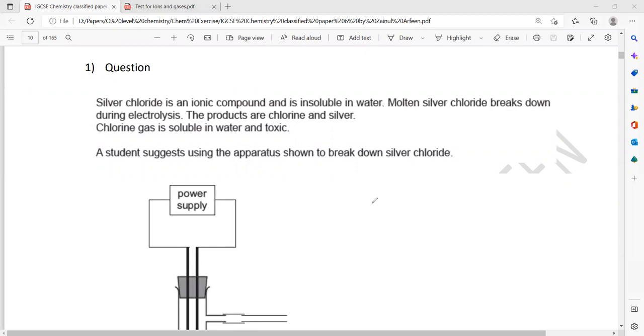If you have molten silver chloride, it contains Ag+ and Cl-. When we pass the current, the silver ions are positive ions so they are attracted towards the cathode, and the chloride ions are negative so they are attracted towards the anode. Silver metal will be there and yellowish green chlorine gas will be given, so shiny solid and yellowish green gas. A student suggests using the apparatus shown to break down silver chloride.